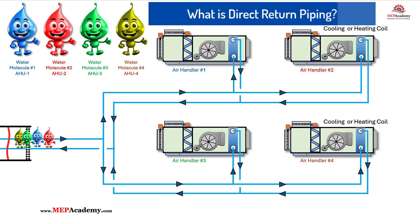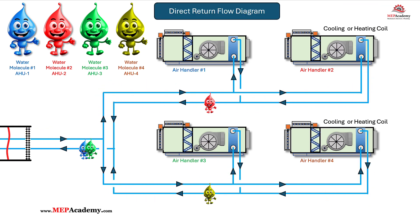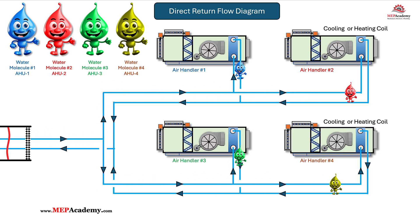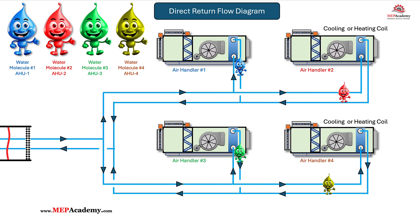What is direct return piping? In a direct return piping system, water flows to each air handler coil and returns along the shortest path. This means that the closest air handler coil to the heating or cooling supply source — such as a boiler or chiller — will have the shortest overall piping length, while the furthest air handler will have the longest piping route.